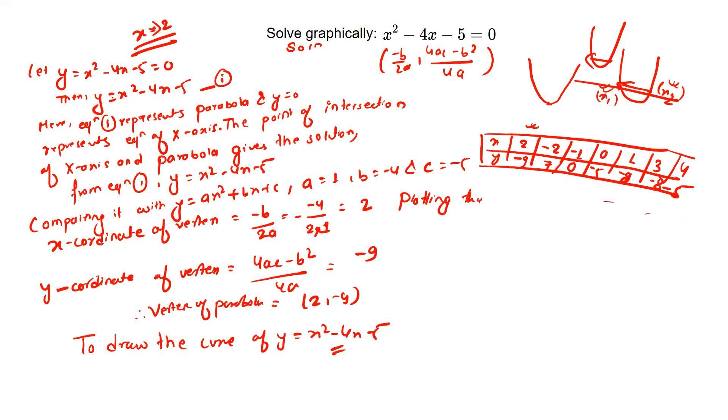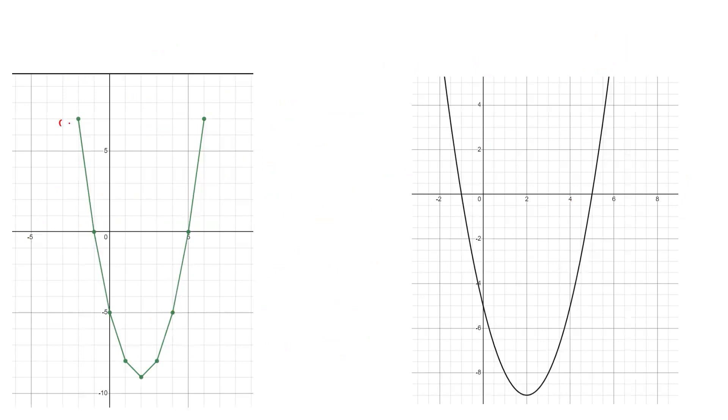Now plotting these points on the graph and joining them, we get a parabola. The vertex is at 2, minus 9, as we calculated.